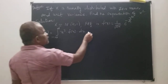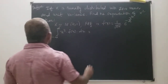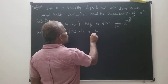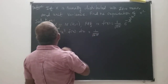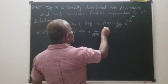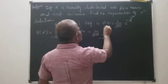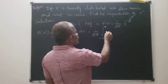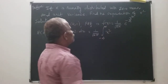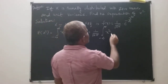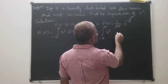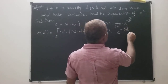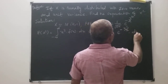So, again, this is equal to 1 by square root of 2π, integral from minus infinity to plus infinity, of x squared into e to the power minus x squared by 2, into dx.